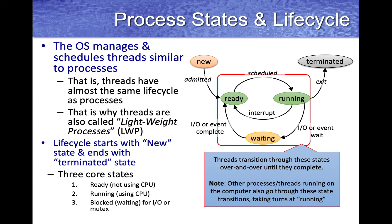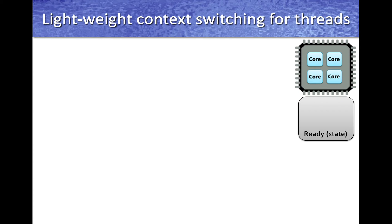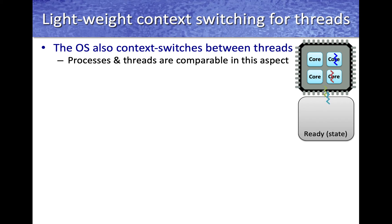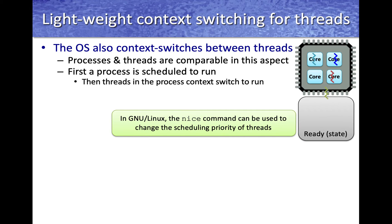The operating system context switches between threads, and processes and threads are very comparable in terms of scheduling. Typically, the OS schedules the process to run first, and then threads within the process context switch to utilize different CPU resources. In GNU Linux, you can use the nice command to change the scheduling priority — high priority threads get more CPU time, while lower priority threads are scheduled less often.